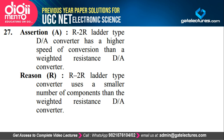Question 27: Assertion — R2R ladder type DA converter has higher speed of conversion than a weighted resistance DA converter. This is correct, because each bit is handled individually and very fast. Reason — R2R ladder uses a smaller number of components than weighted resistance. This is not correct — in R2R, for each bit we use one R and one 2R, so two elements per bit, whereas in weighted resistance DAC the number of resistors equals the number of bits. So assertion is correct, reason is wrong — answer is option C.